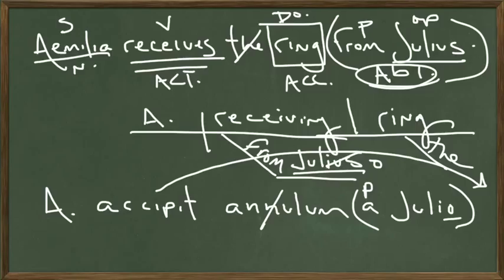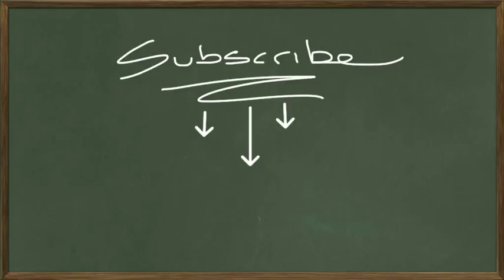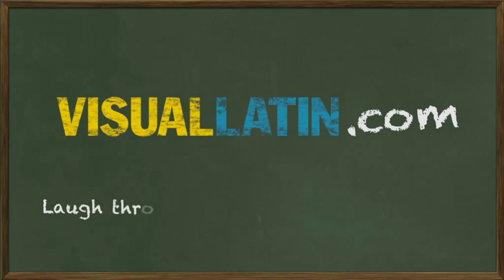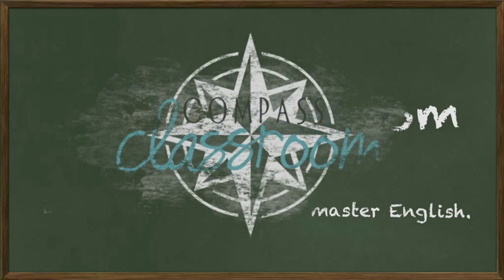So there you go. We now have this sentence translated into Latin. And we've got Julius in the ablative case. If you like this tutorial and you enjoy bad handwriting, then by all means, subscribe and learn more. I'll see you next time. Vale.